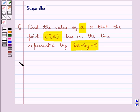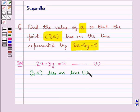Let's proceed with the solution now. The line given to us is 2x minus 3y equal to 5. Let this be line 1. Now we are given that the point (3,A) lies on the line represented by equation 1.